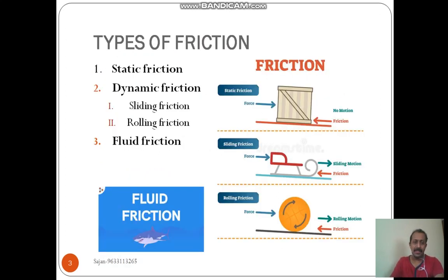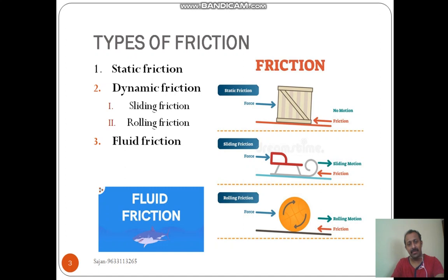Let us see the types of friction. The first one is static friction. As the name indicates, static friction is the frictional force occurring when the object is in a static condition or at rest. The second one is dynamic friction. When the body is in a moving condition, the friction force occurring is called dynamic friction. There are two types: sliding friction and rolling friction. If the body is sliding over a flat surface, it is called sliding friction. If the body is moving with the help of rollers, it is called rolling friction.